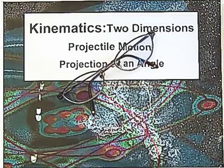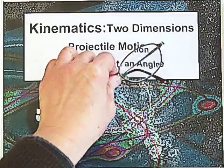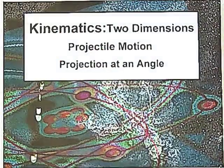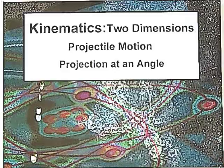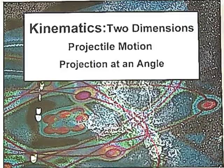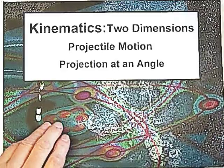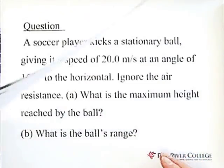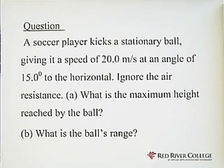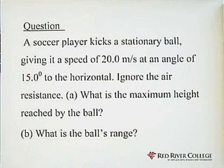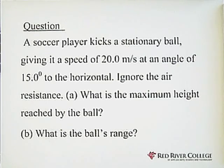Welcome to Wiseguys. This video is for projected motion at an angle. A soccer player kicks a stationary ball, giving it a speed of 20 meters per second at an angle of 15 degrees to the horizontal.